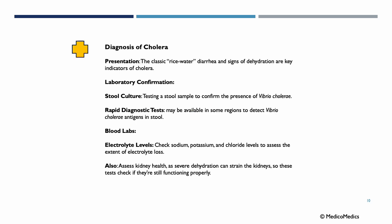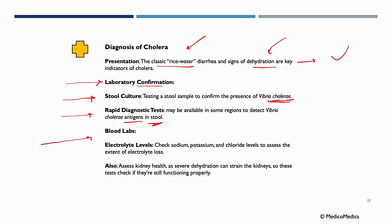For diagnosis, presentation with classic rice water diarrhea and observable signs of dehydration are key indicators of cholera. Labs to confirm include a stool culture to confirm Vibrio cholera, and rapid diagnostic tests available in some regions to detect Vibrio cholera antigen in stool samples. Blood labs assess electrolyte levels — sodium, potassium, and chloride — to evaluate electrolyte loss, and kidney function should be assessed since severe dehydration strains the kidneys.